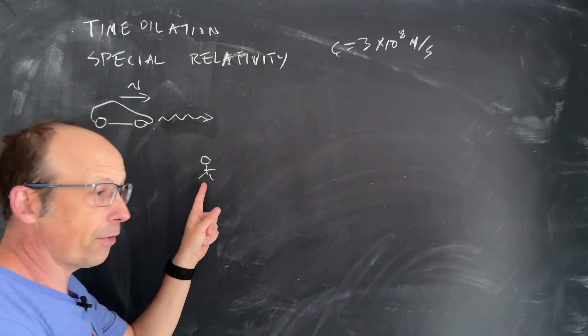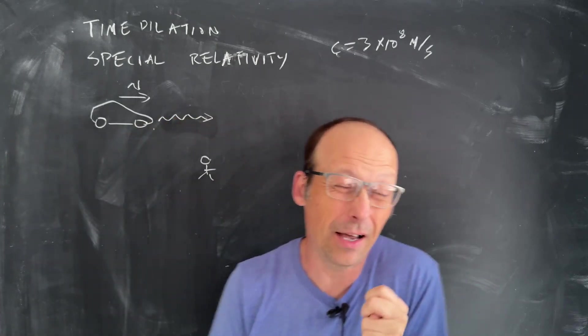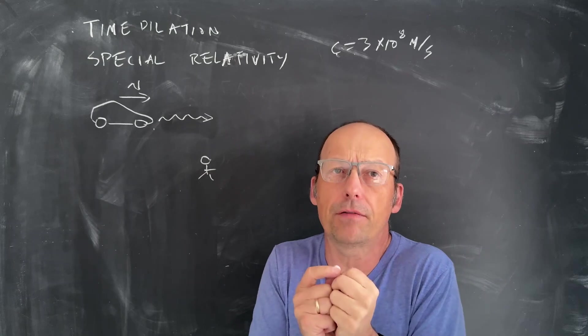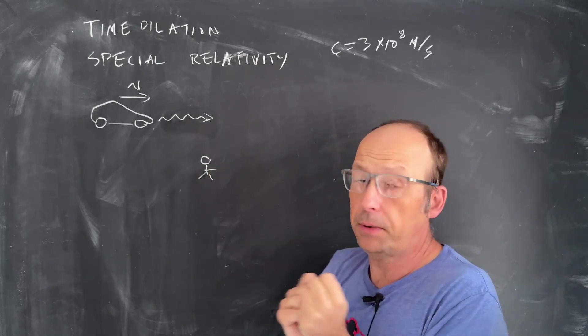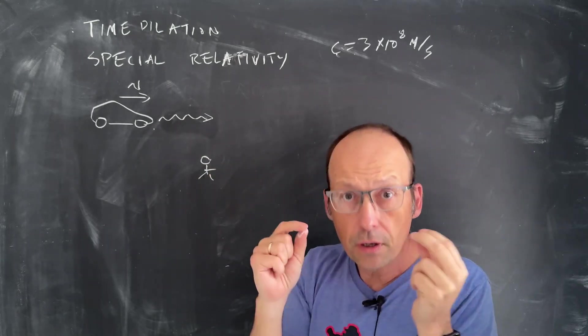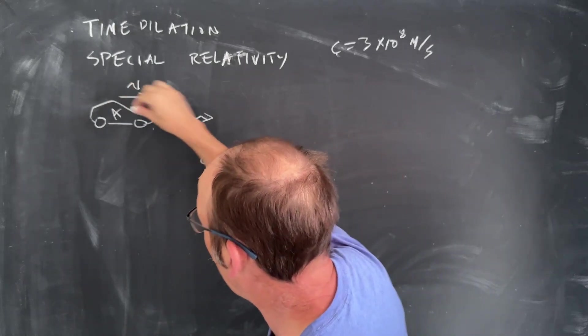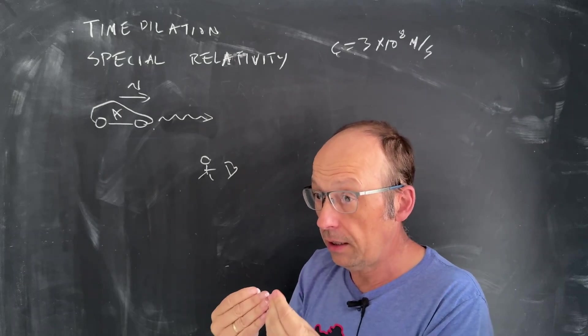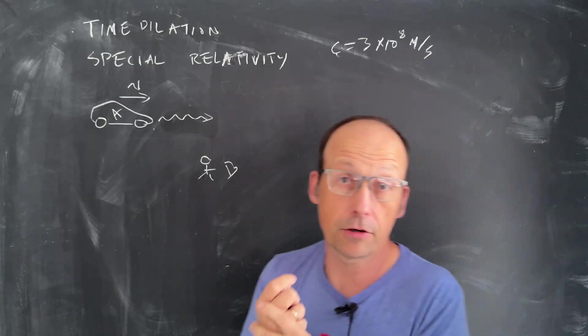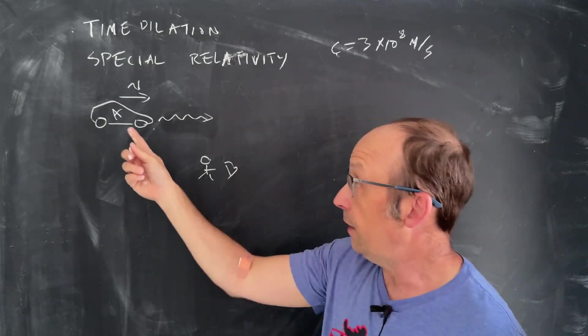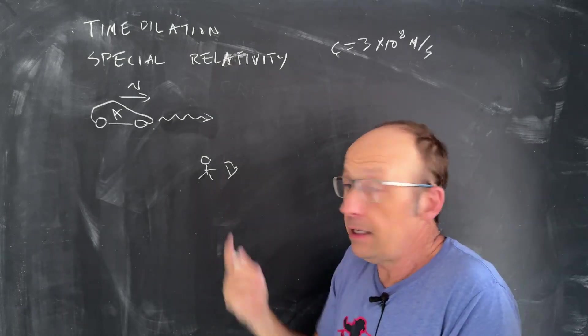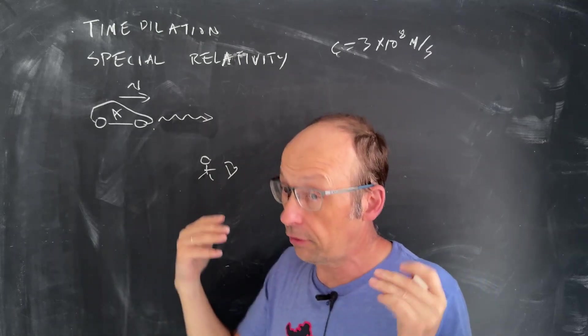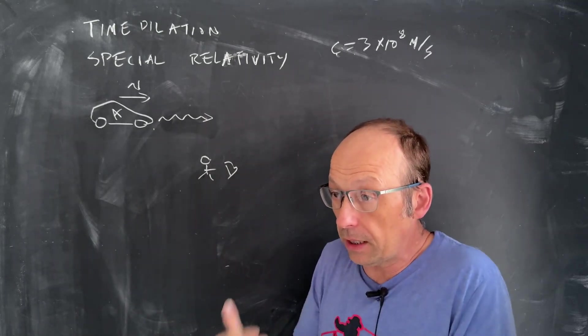What if there's another person over here and they measure the speed of light? Both observers, the car which we'll call person A and the person standing there, person B, they both see the speed of light as 3 times 10 to the eighth meters per second. Even if the car is going half the speed of light, person B does not see that light at 1.5 times the speed of light. They see it at the speed of light. Everyone sees the speed of light as the speed of light.